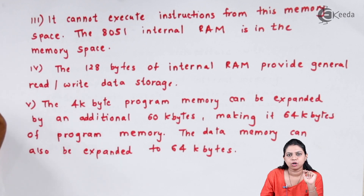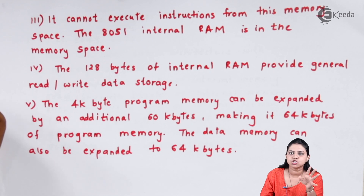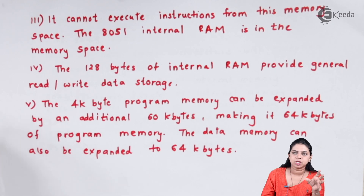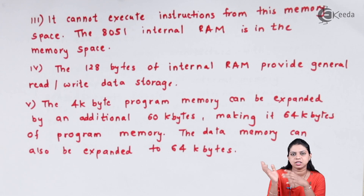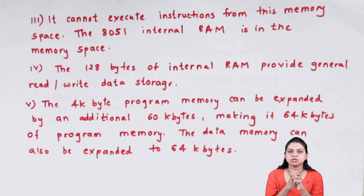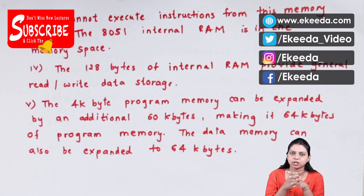To summarize: program memory space can be called ROM — you can only read instructions from it, you cannot write into it. Data memory space can be called RAM — you can both read and write. Program memory space is used for storing data and instructions, whereas data memory space is used for reading and writing data. This covers the memory map of the 8051 microcontroller.